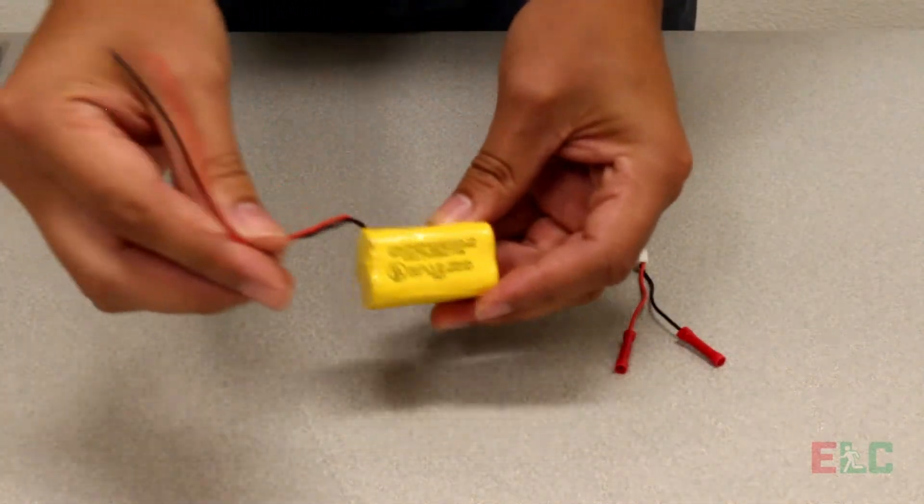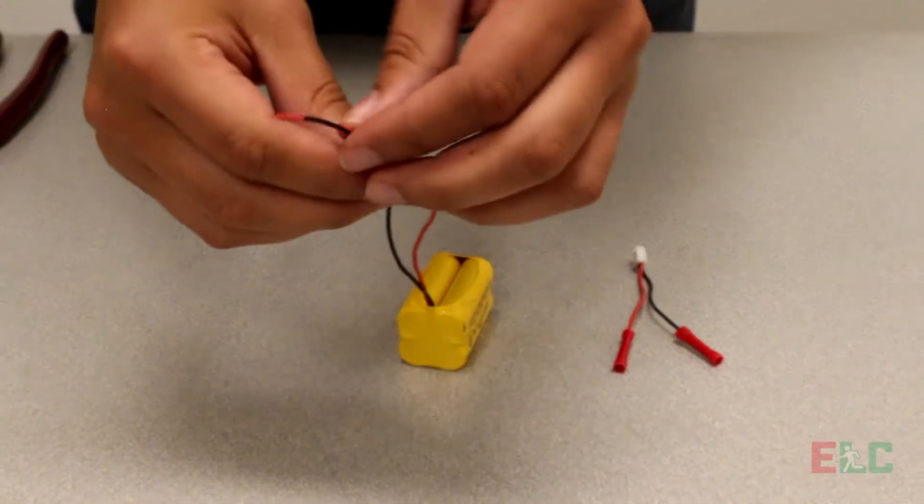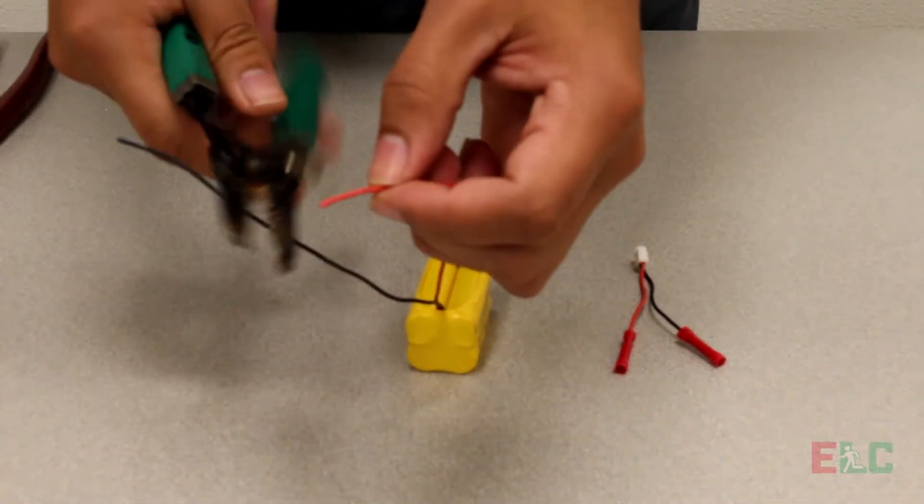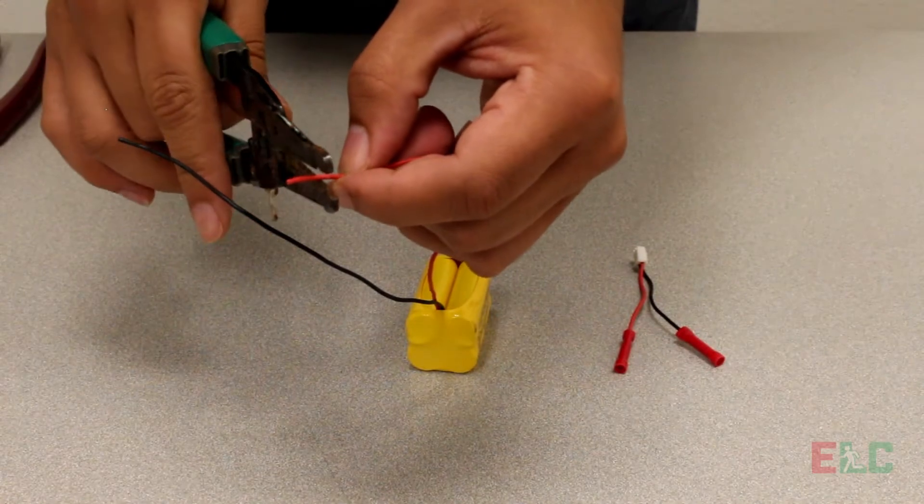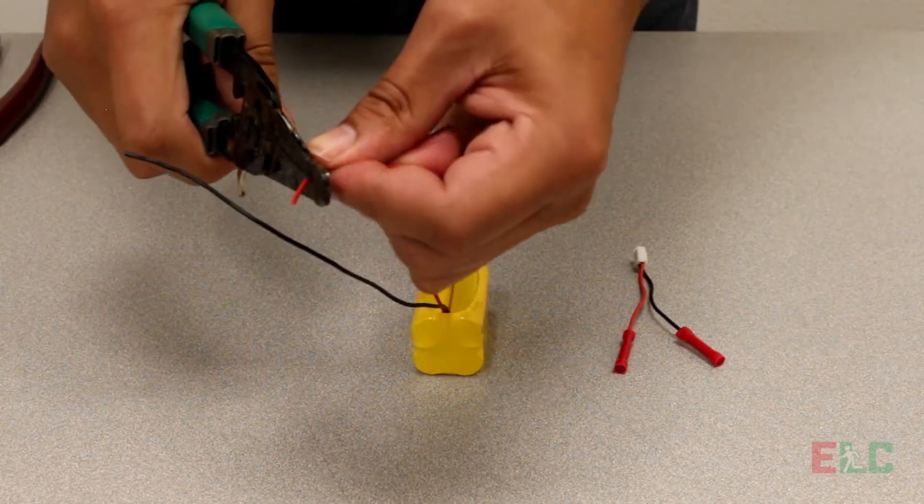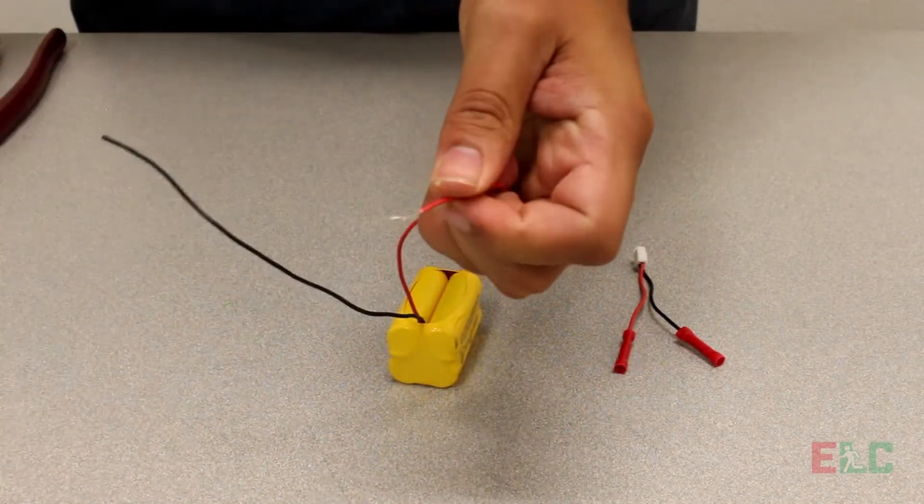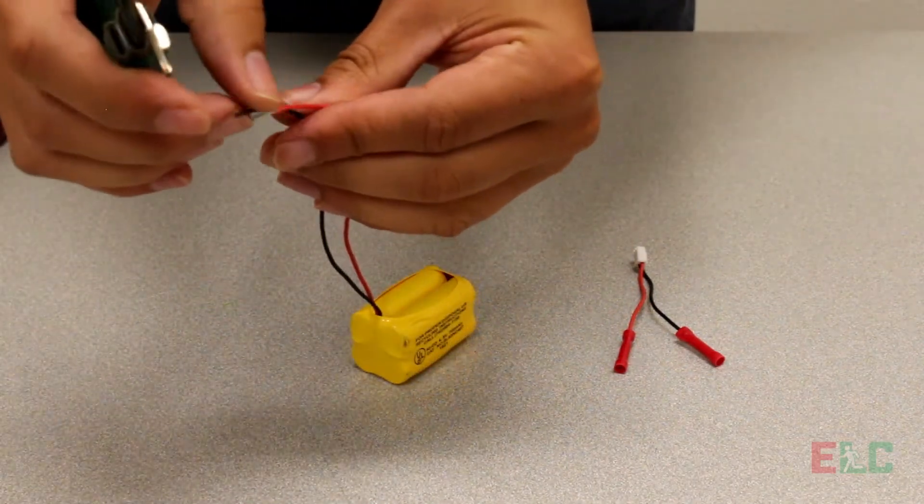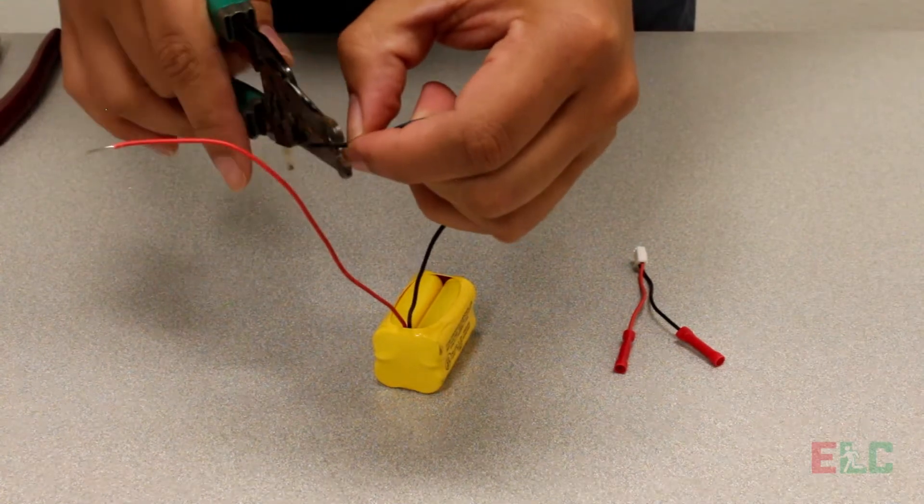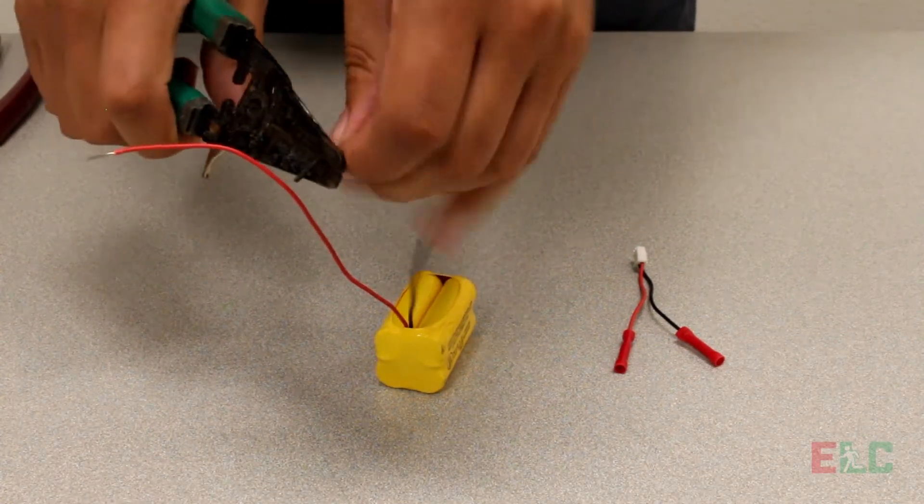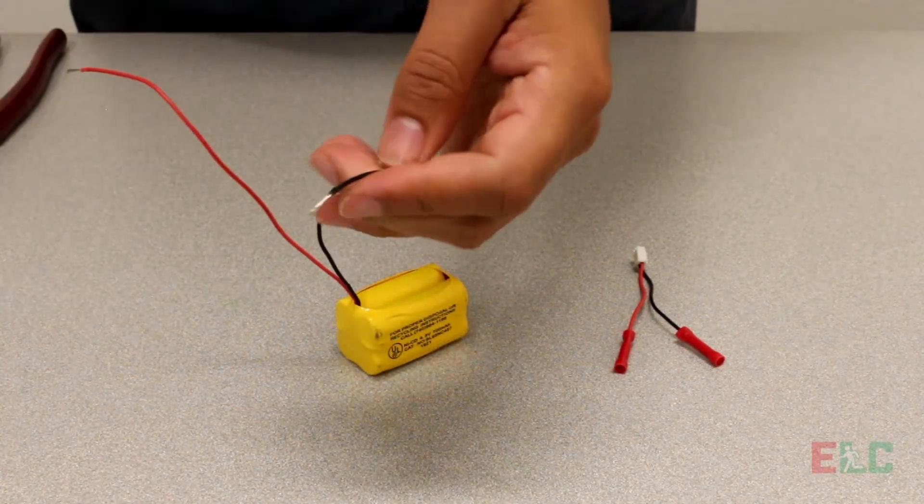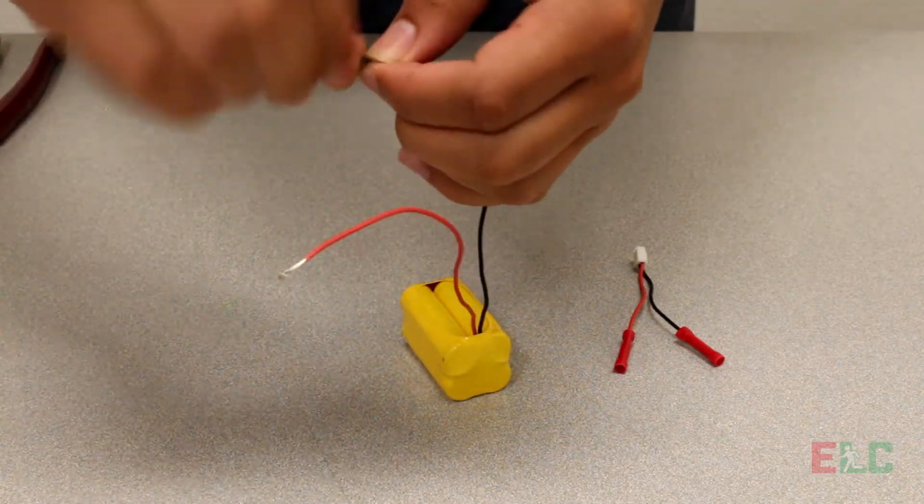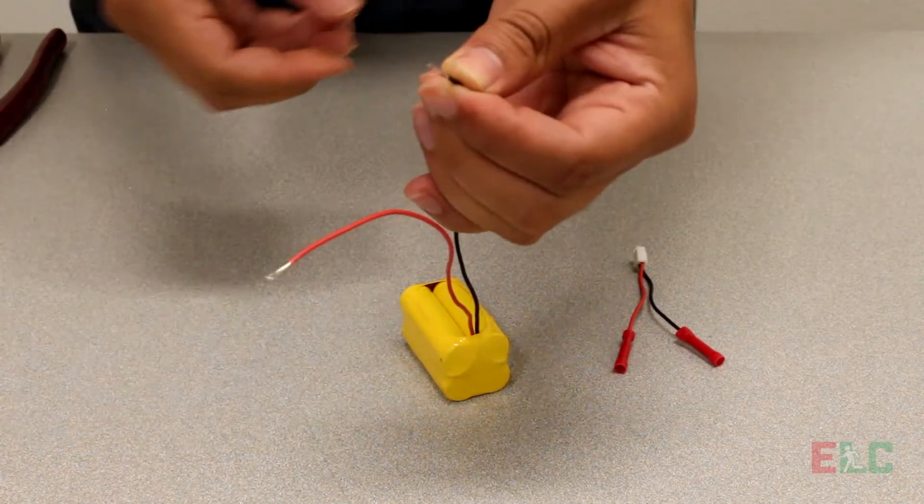Grab your new battery and repeat the splicing process. Strip both red and black wires and twist each wire. Strip the connector.